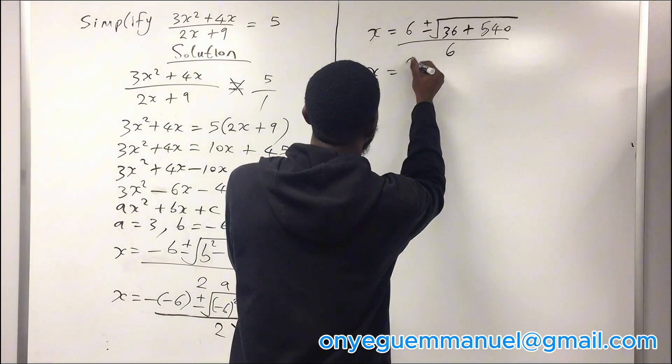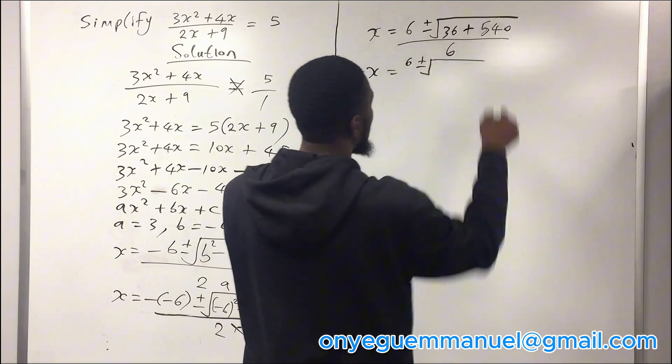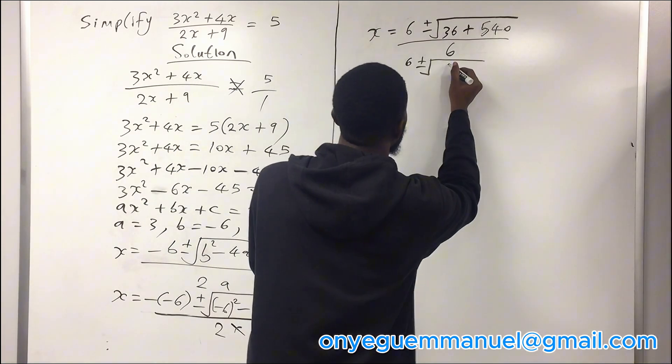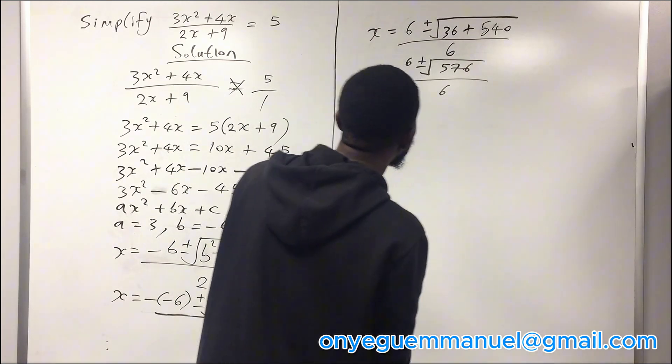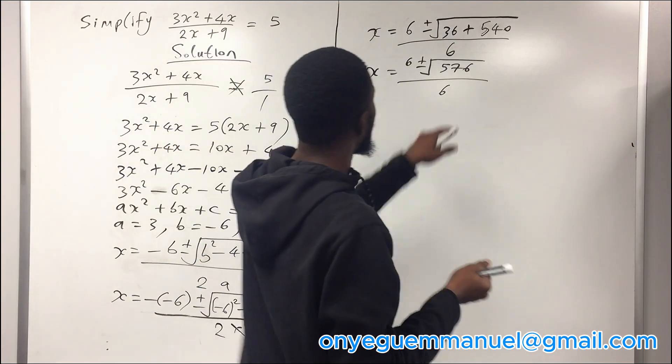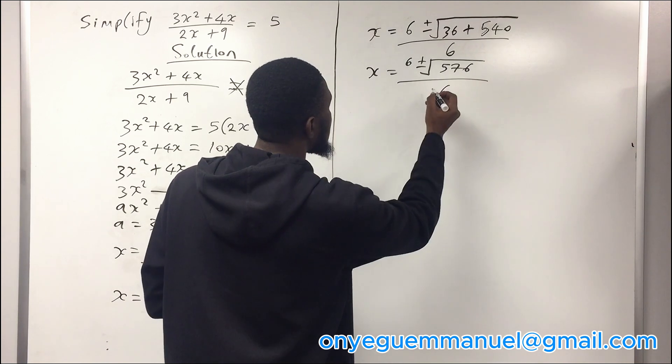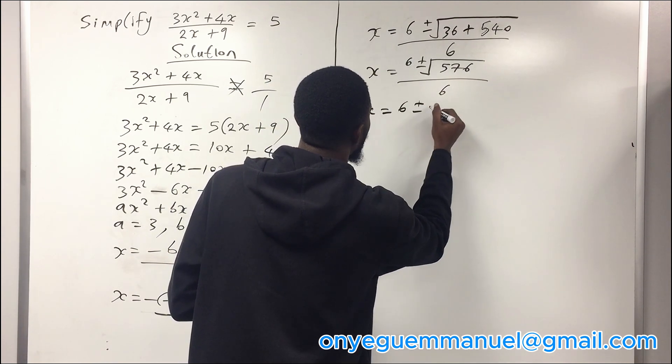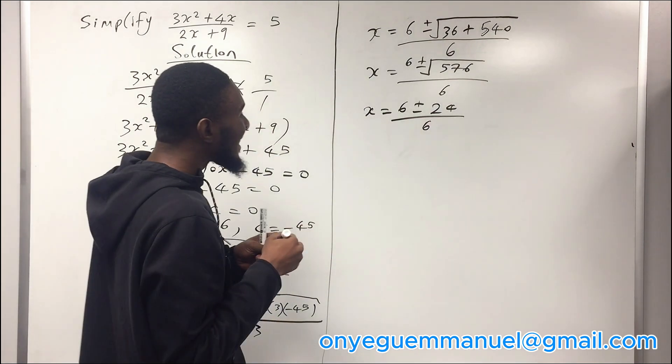x equal to 6 plus or minus square root of 36 plus 540 will give you 576 over 6. So the square root of 576 is 24, so here we have x equal to 6 plus or minus 24 over 6.